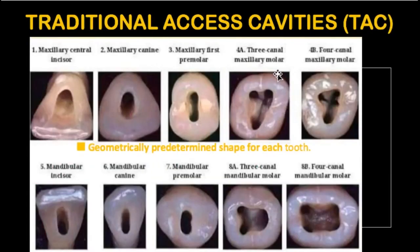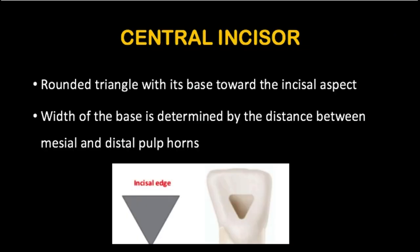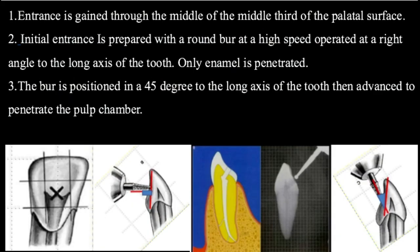Coming to the traditional access cavities — these are the various shapes of access cavities you will gain with different types of teeth. For the central incisor, the access cavity will be in the shape of a rounded triangle, with the base at the incisal aspect. The width of the base is determined by the distance between the mesial and distal pulp horns. You start your access opening at the middle of the middle third of the tooth.